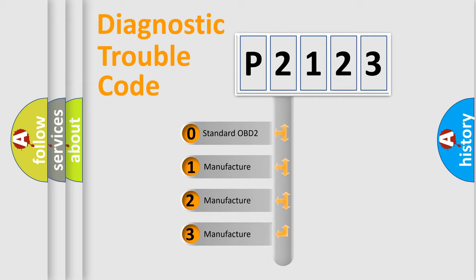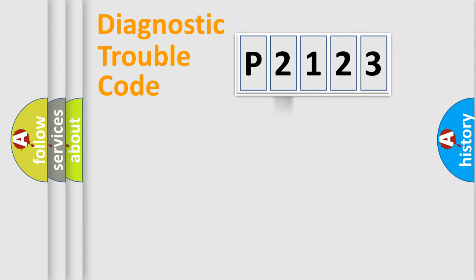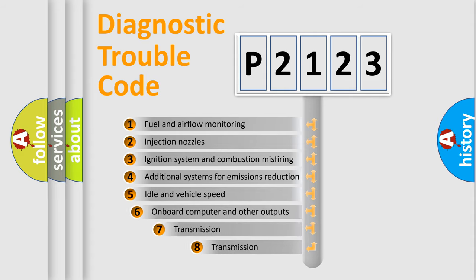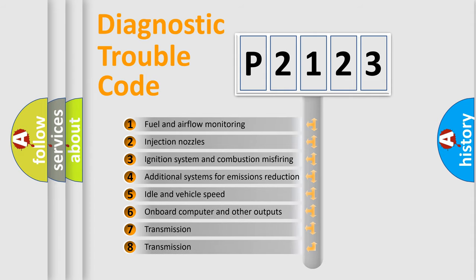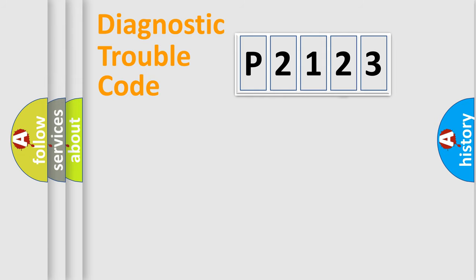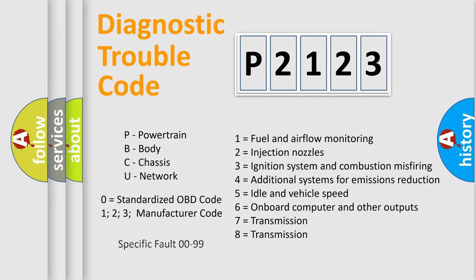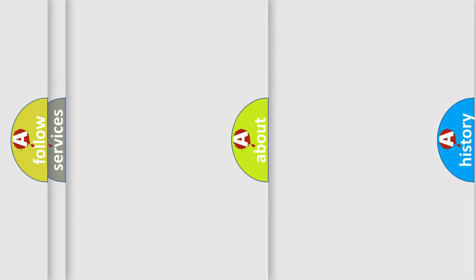If the second character is expressed as zero, it is a standardized error. In the case of numbers 1, 2, 3, it is a manufacturer-specific error. The third character specifies a subset of errors. The distribution shown is valid only for the standardized DTC code. Only the last two characters define the specific fault of the group. Let's not forget that such a division is valid only if the second character code is expressed by the number zero.